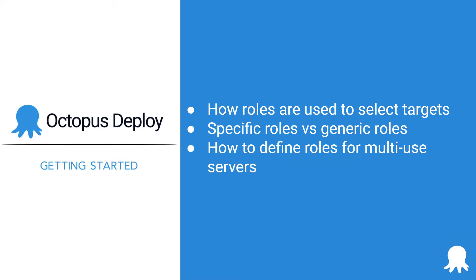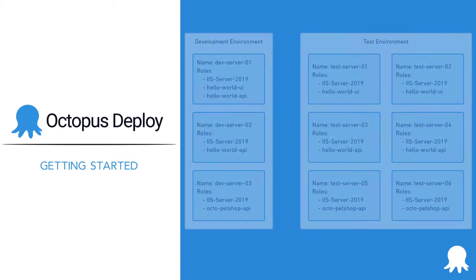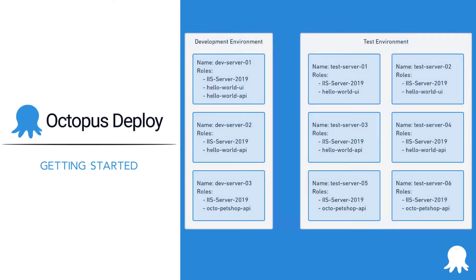Before jumping into the demo, it is important to understand how roles work at a high level. Roles are assigned to deployment targets and are how Octopus Deploy selects targets during a deployment or runbook run. They can be generic, such as IIS Server 2019, or specific, such as Hello World API. A deployment target can have one to N roles.